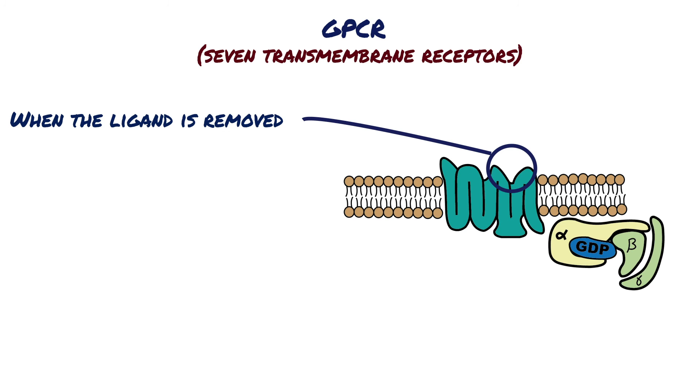Cell signaling using G-protein coupled receptors is a cycle, one that can repeat over and over in response to ligand binding.